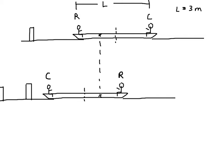The next piece of information is that the boat moved 40 centimeters as a result of their switching. Looking at the center of the boat, the distance between the center's initial and final position is D, where D equals 0.4 meters.